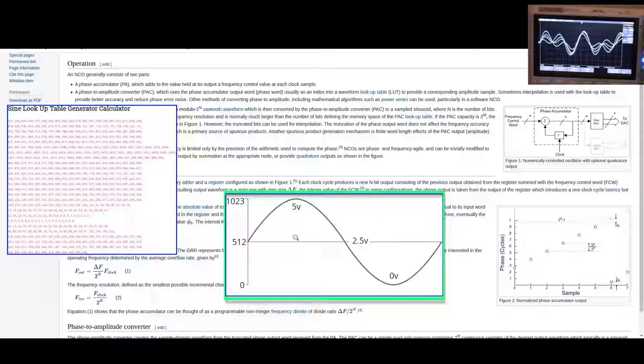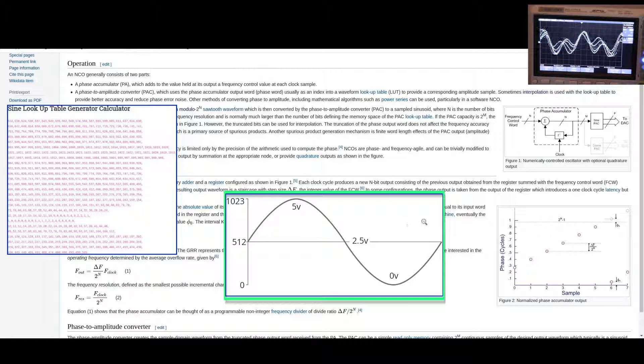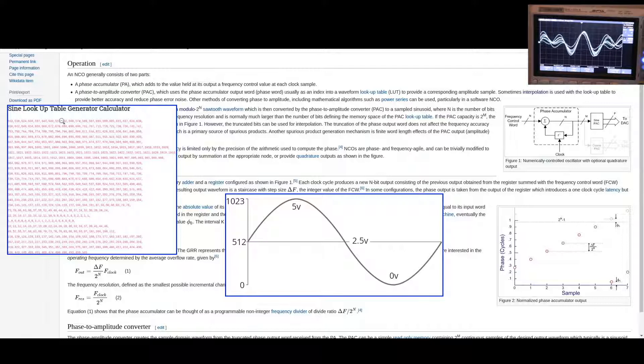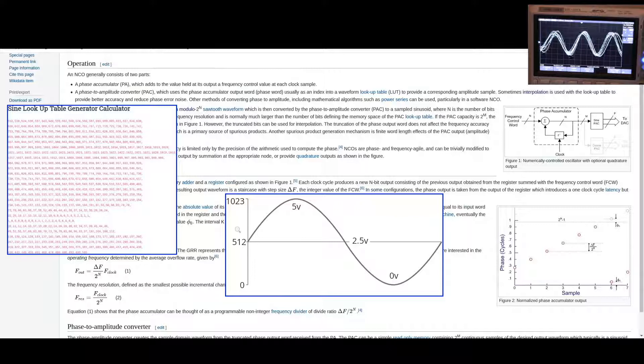We can try to improve this by interpolating between points we're plotting when skipping samples. We'll also do external RC low-pass filtering to help smooth things out. But in general, for audio sine wave purposes, this works well on its own as-is.